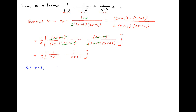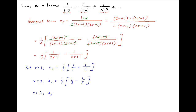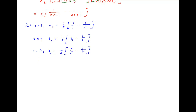Now put r equal to 1 to get the value of u1, the first term. This is equal to half times, in brackets, 1 minus 1 upon 3. Put r equal to 2, we get u2 equal to one half times (1 upon 3 minus 1 upon 5). Put r equal to 3, we get u3 equal to half of (1 upon 5 minus 1 upon 7). And so on. Finally, when r is equal to n, u_n is equal to half of (1 upon 2n minus 1 minus 1 upon 2n plus 1).